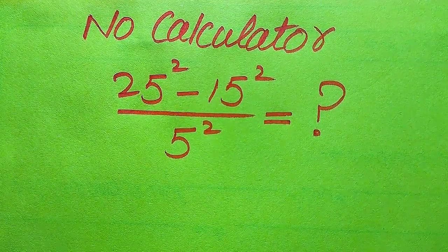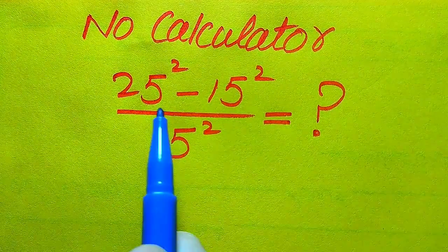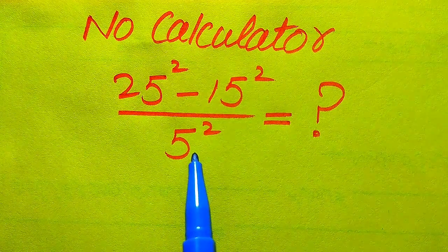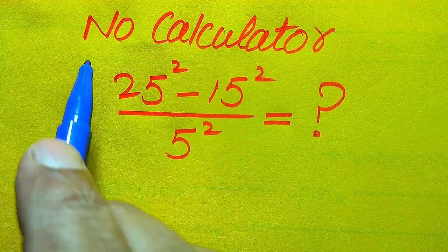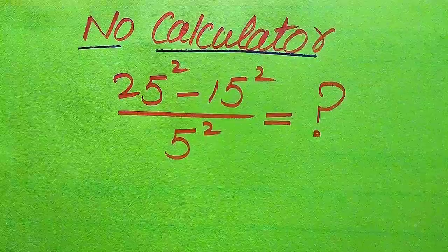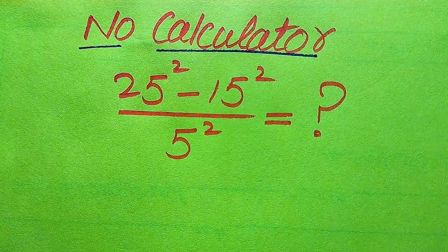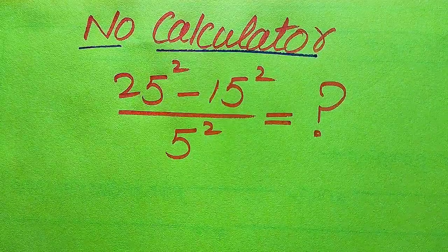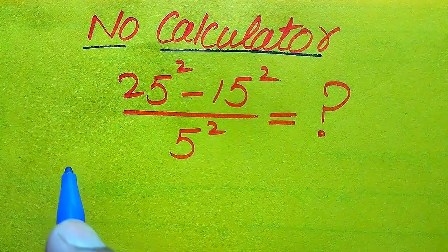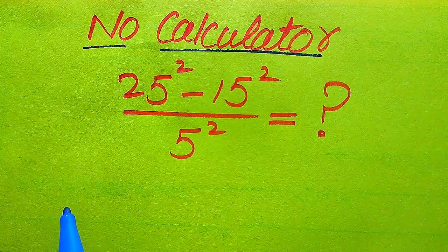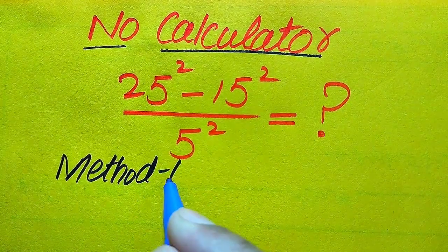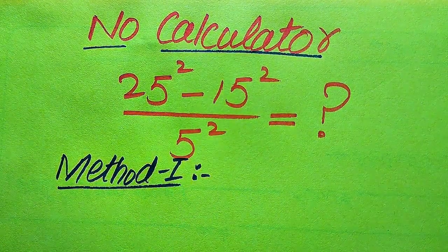Hello everyone. How to simplify this algebraic expression: 25 squared minus 15 squared, divided by 5 squared, and write it in its simplest form. Remember, a calculator is not allowed in this problem, so we need to show all working on paper. You need to remember all these steps in order to gain full marks in your exam. I will solve this problem step by step using three methods.